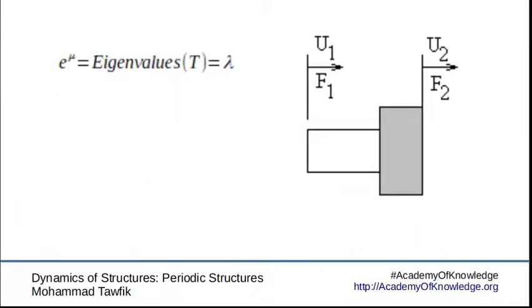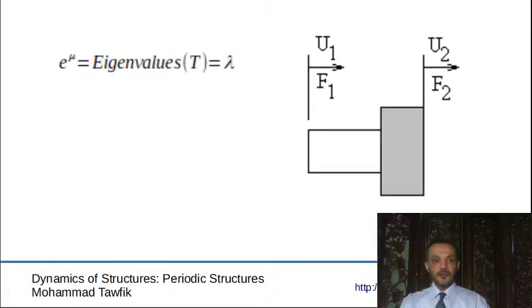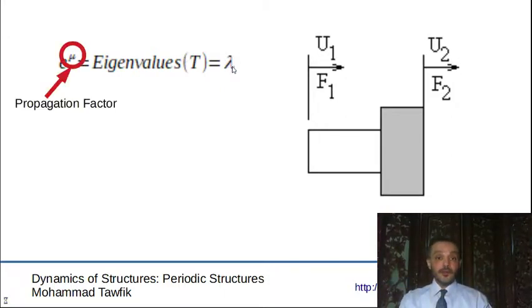Now we are going to handle the eigenvalue problem here, in which e to the mu is actually equal to the eigenvalues of the T matrix. We may call these eigenvalues lambda. However, we have a special name for the mu that we are going to be using from now on: the propagation factor.